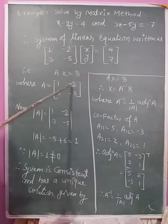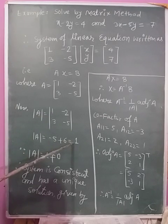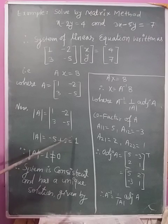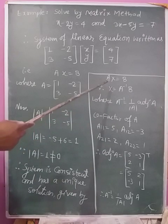That is AX = B where A is 1, -2; 3, -5. Now determinant of A is equal to, after solving, we get determinant of A is 1 which is not equal to zero. So the system is consistent and has a unique solution.